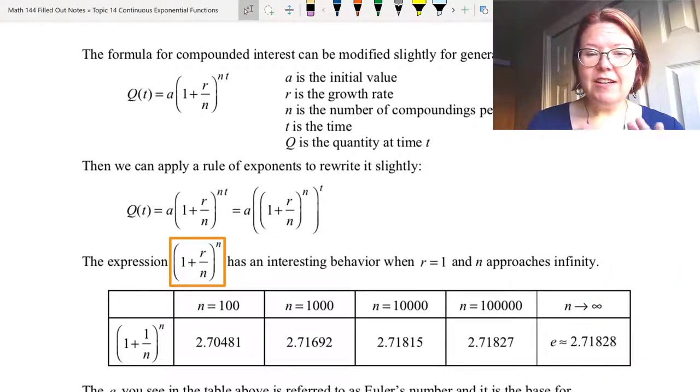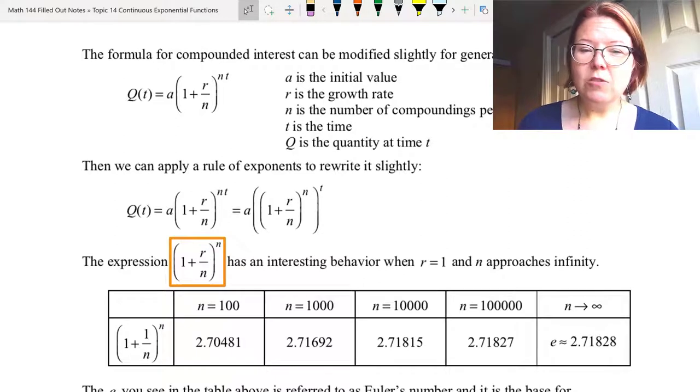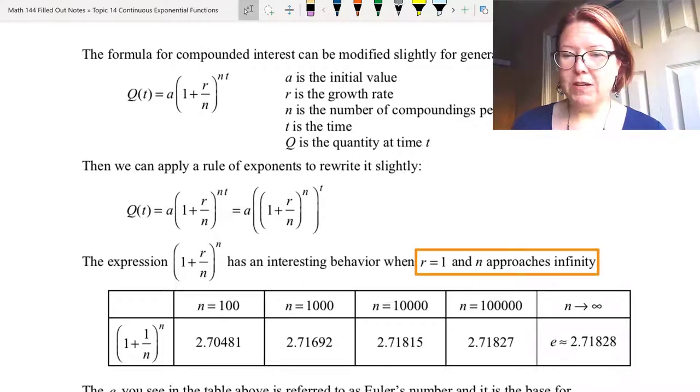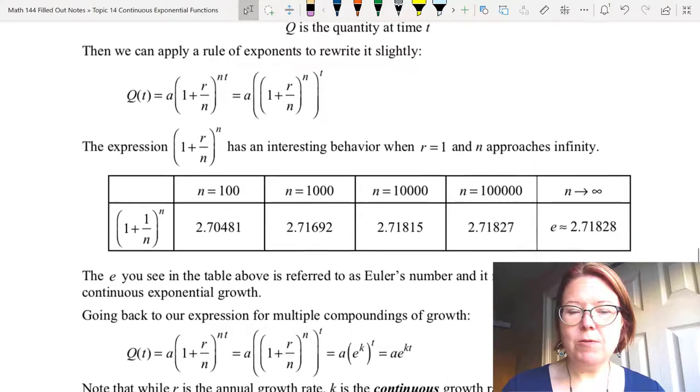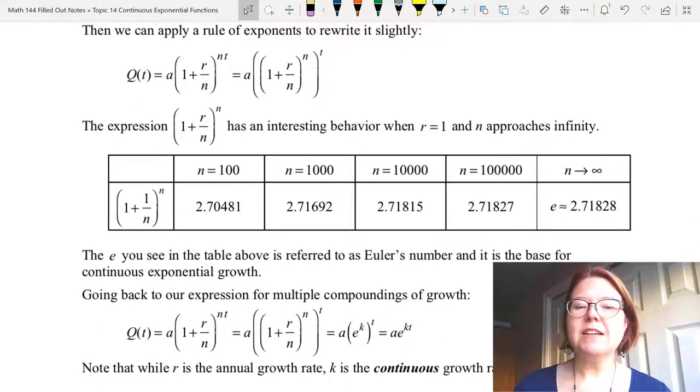This expression in parentheses, (1 plus r over n) to the n power, has an interesting behavior when r equals 1 and n approaches infinity. Let's do a quick calculation in a table of what (1 plus 1 over n) raised to the nth power comes out to be when n is 100, 1000, 10,000, and 100,000.